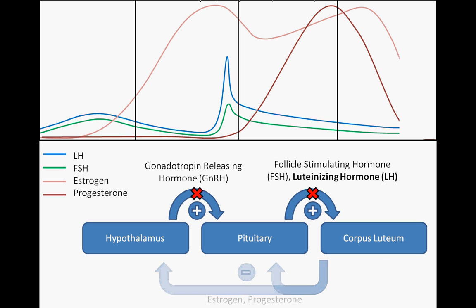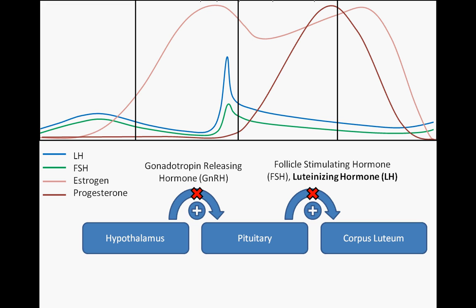As the corpus luteum disintegrates, levels of estrogen and progesterone precipitously fall. As a result, the uterine lining is no longer supported and is subsequently shed. This shedding of the uterine lining marks menstruation.